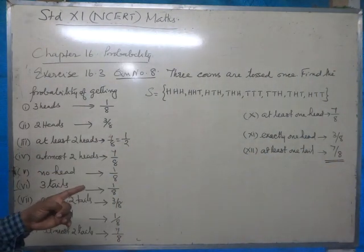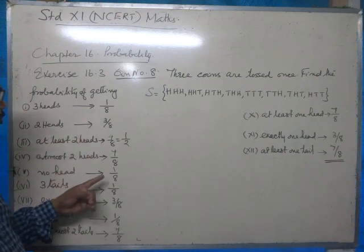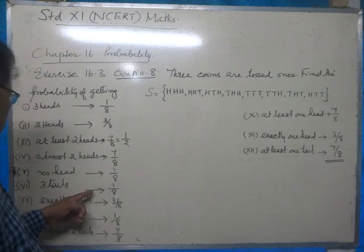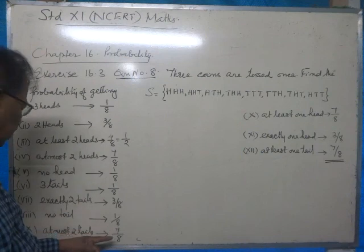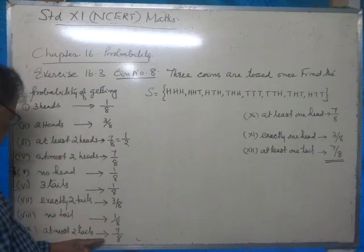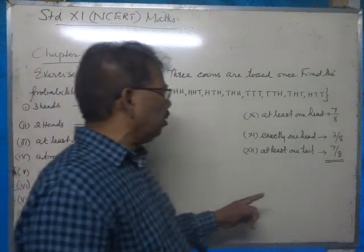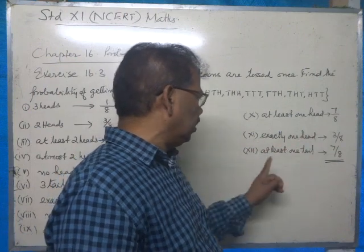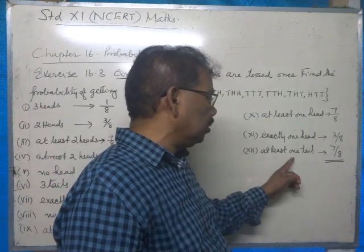To summarize all answers: first is one by eight, second three by eight, third one by two, fourth seven by eight, fifth one by eight, sixth one by eight, seventh three by eight, eighth one by eight, ninth seven by eight, tenth at least one head is seven by eight, eleventh exactly one head is three by eight, and twelfth at least one tail is seven by eight.